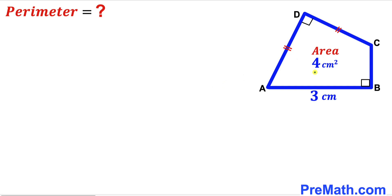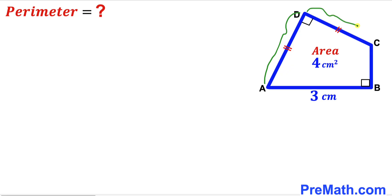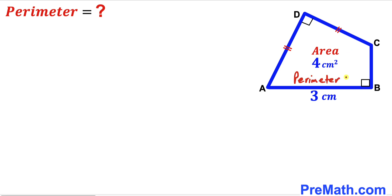Welcome to PreMath. In this video we have quadrilateral ABCD such that side length AB is 3 cm, the side lengths AD and CD are equal in length, and the area of this quadrilateral has been given as 4 cm². Our task is to calculate the perimeter of this quadrilateral ABCD.